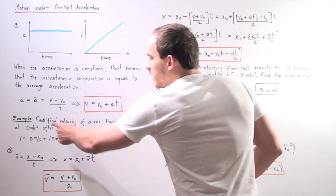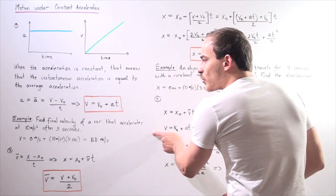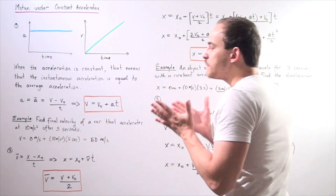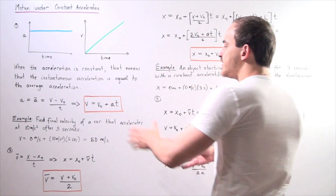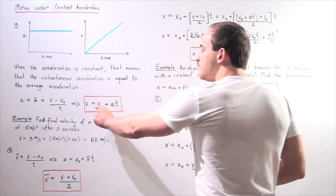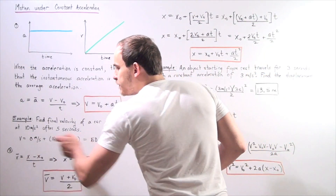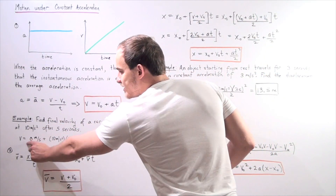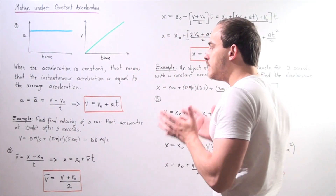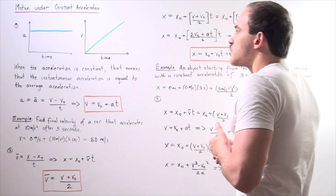Let's do a quick example. Find the final velocity of a car that accelerates at a constant acceleration of 10 meters per second squared after 5 seconds. We take our formula and assume the car began from rest, so v initial is 0. Therefore, v final equals 0 plus 10 times 5, which gives us 50 meters per second as the final velocity of our car.